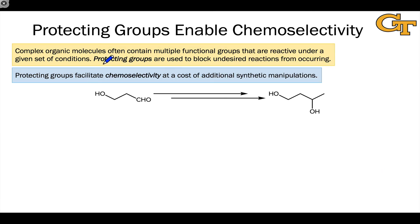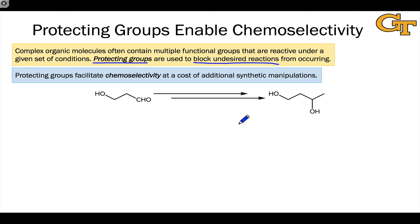Protecting groups turn out to be very important in practical syntheses because in complex organic molecules with multiple functional groups, we often have multiple functional groups that can react under a given set of conditions. We can use protecting groups to block undesired reactions from taking place in those functional groups that we want to stay put. Another way of stating this is that protecting groups facilitate what's called chemoselectivity — the selective operation of a set of reaction conditions on a single functional group.